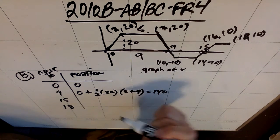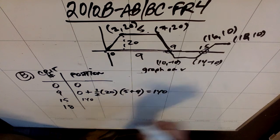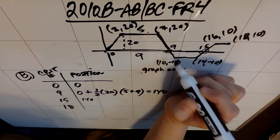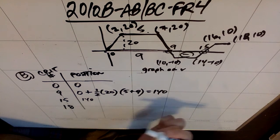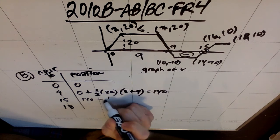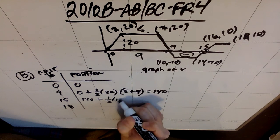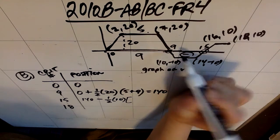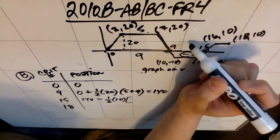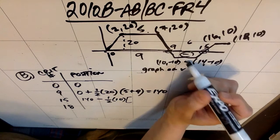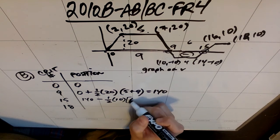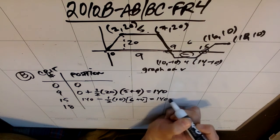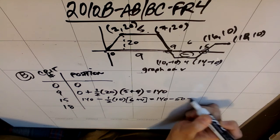For t equals 15, I take the 140 from t equals 9 and subtract this trapezoid. The height of this trapezoid is 10, this base runs from 9 to 15 which is 6, and this base runs from 10 to 14 which is 4. So minus one-half times 10 times (6 plus 4) gives minus 50. So the position at t equals 15 is 140 minus 50, which is 90.